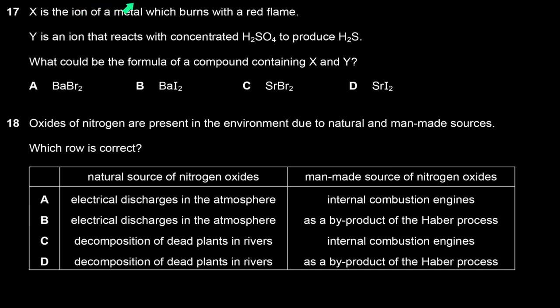X is the ion of a metal that burns with a red flame — that could be calcium or strontium. Y is an ion that reacts with concentrated H₂SO₄ to produce H₂S, so Y must be iodide ions, which can reduce sulfur from +6 to −2. The compound contains strontium and iodide. The answer is D — strontium iodide.